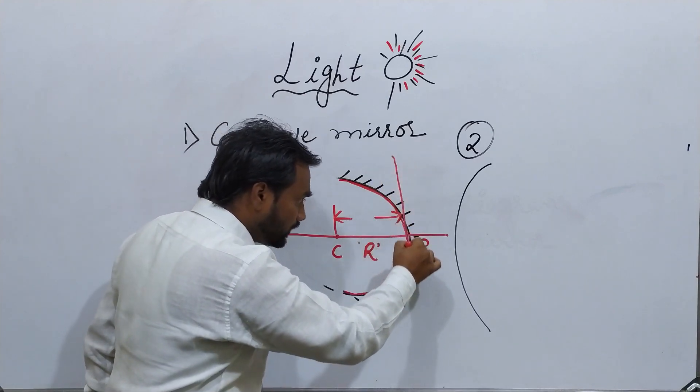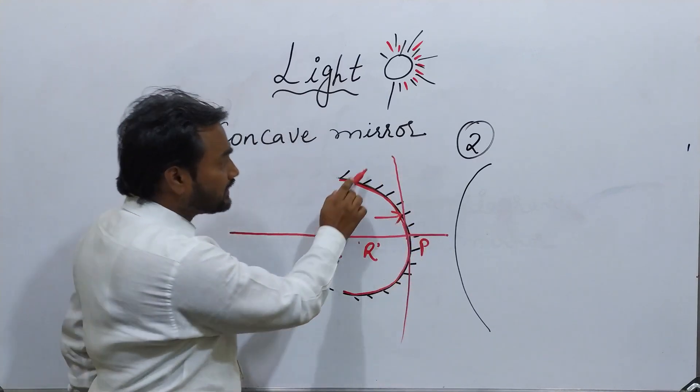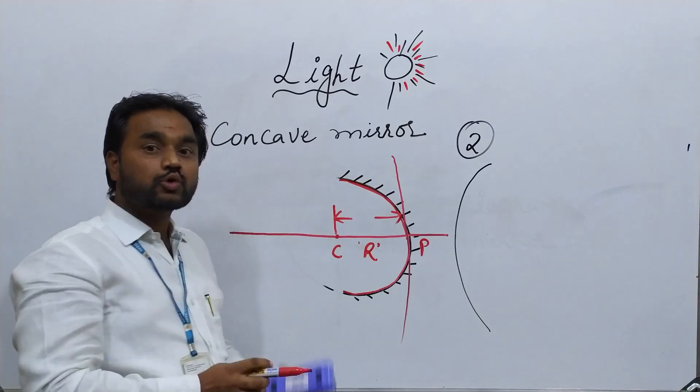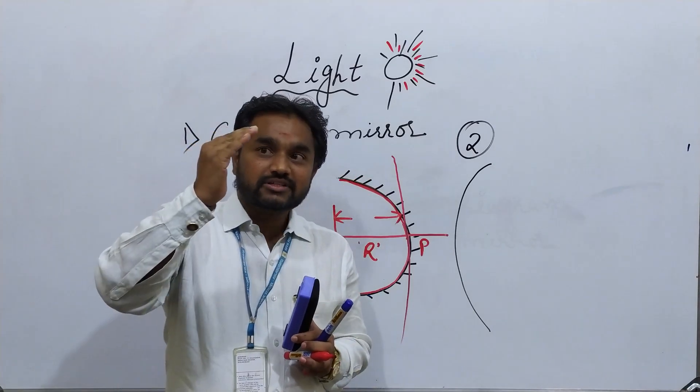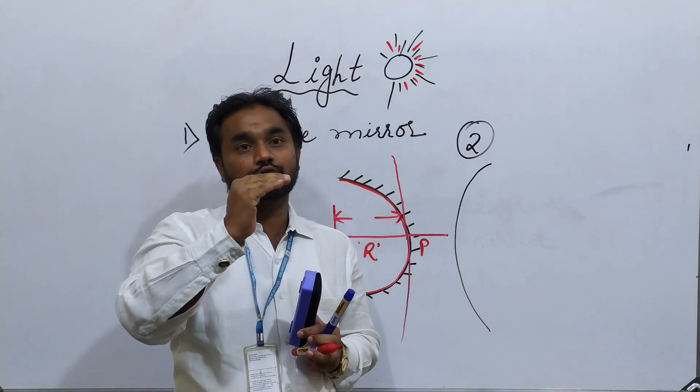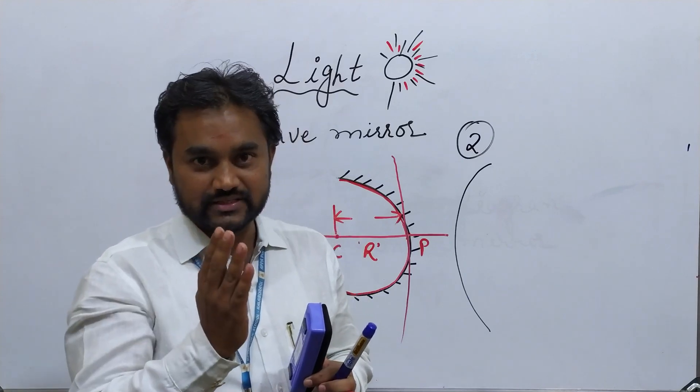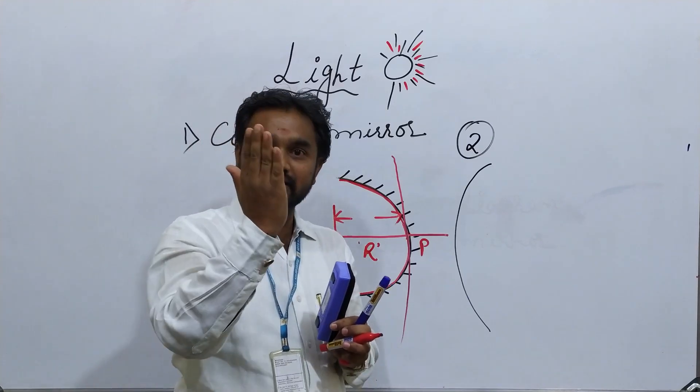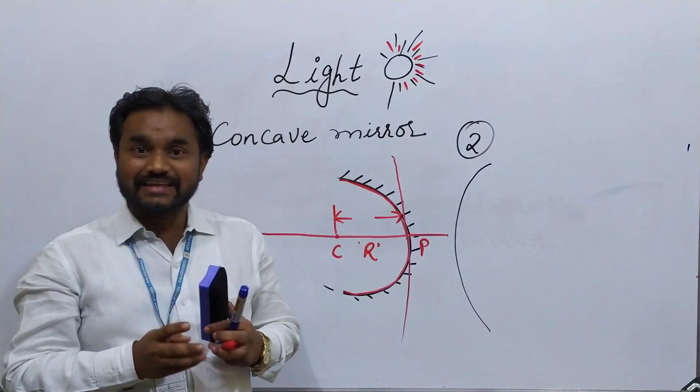So this curvature, I am going to draw one perpendicular line here. This part is called curvature. So as and when the curvature is going to be smaller, then the focal length is going to be increased. If the curvature is going to increase, then the focal length is going to be decreased.